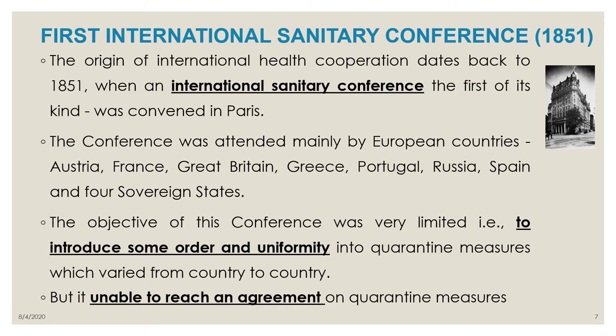The conference was attended mainly by European countries like Austria, France, Great Britain, Greece, Portugal, Russia and four sovereign states. The objectives were very limited — to introduce some order and uniformity into quarantine measures, which varied greatly from country to country. This conference established a uniform rule for quarantine, since there was no uniform method previously in place.